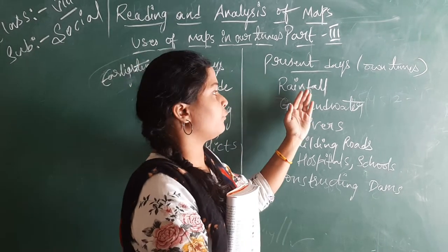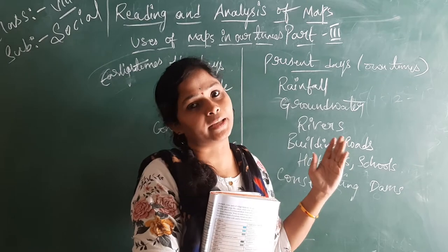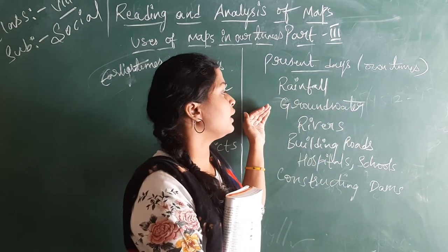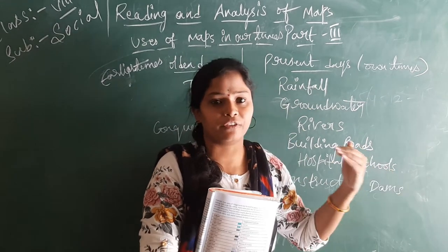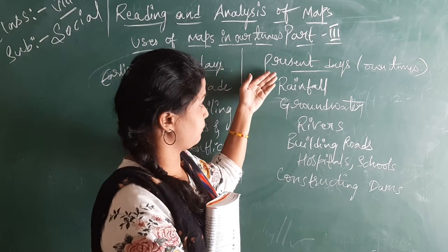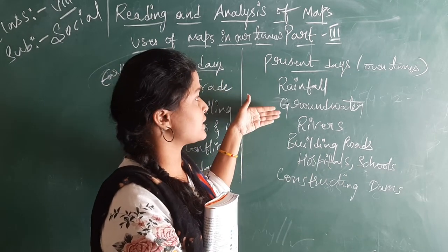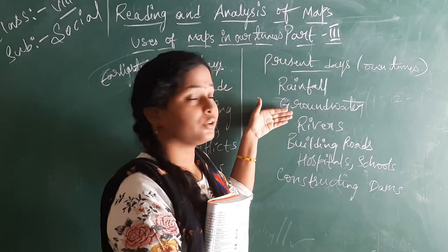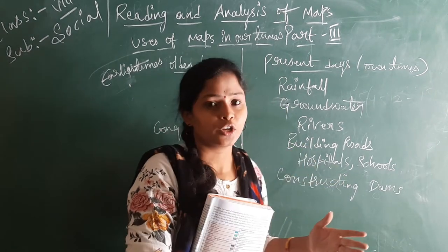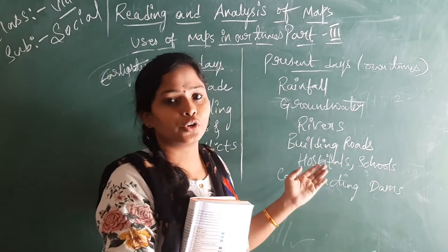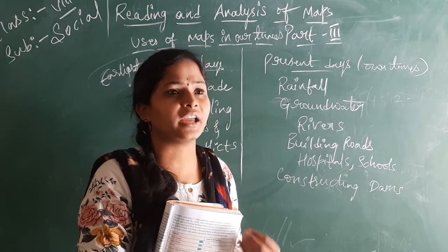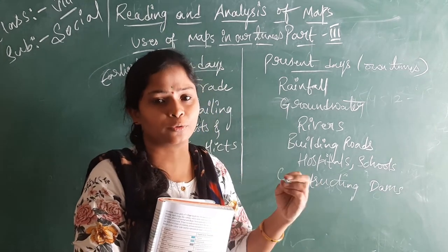At present days, for the rainfall — means the temperature — how much degrees temperature of the rainfall has been issued now. Next is ground water levels. For the usage of ground water also, we calculate like how much water has to be consumed. We will draw a map. Next for the rivers, next building roads. So for the construction of the roads also, we will use maps. Next hospital and the schools — for constructing any building or hospitals or schools or anything, first we need to have a map of how it has to be constructed.